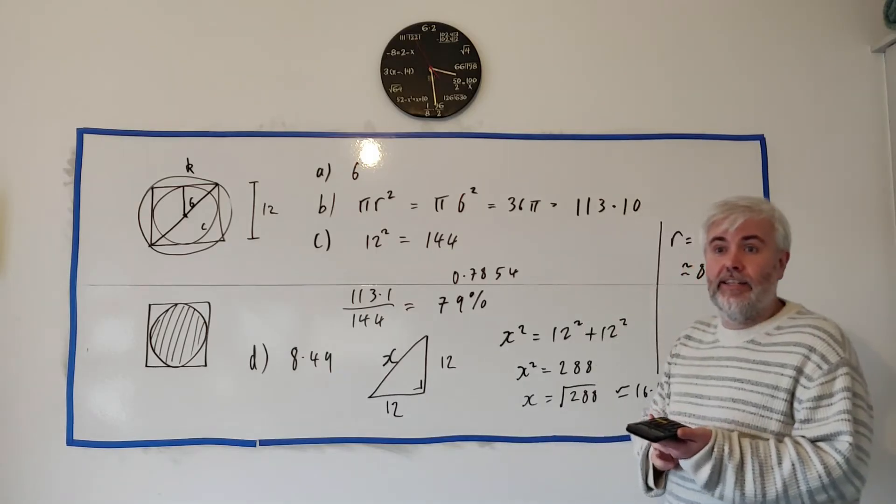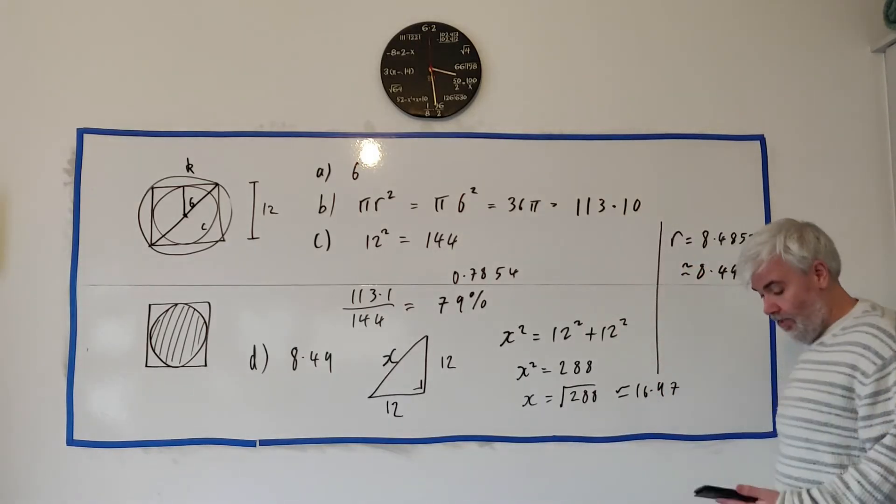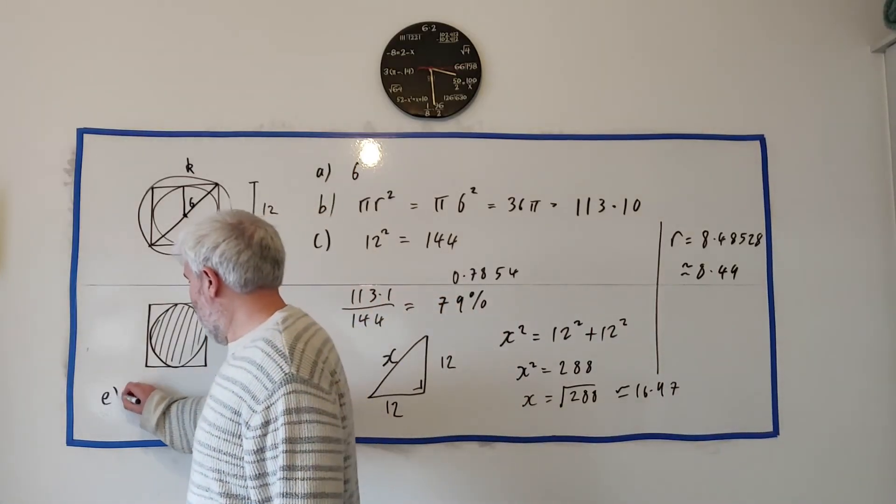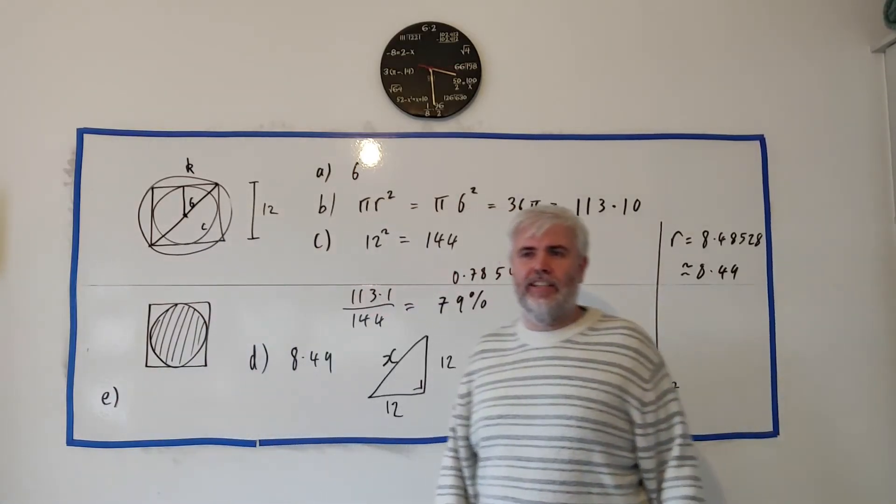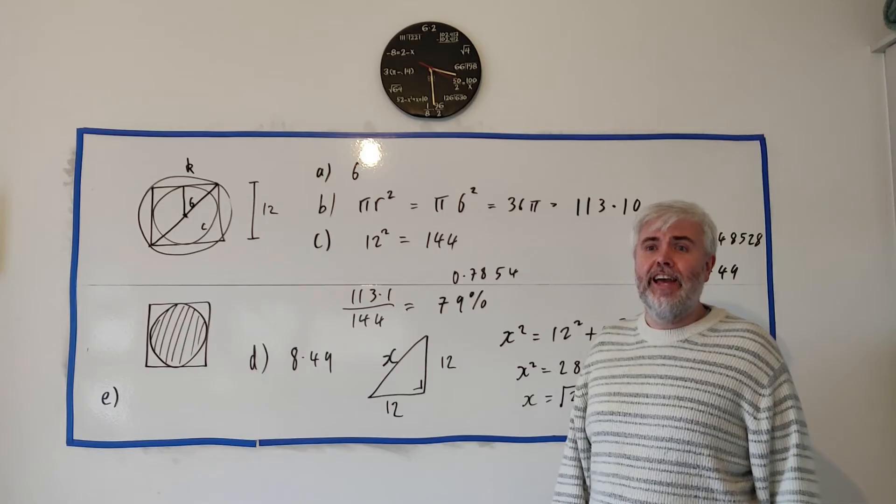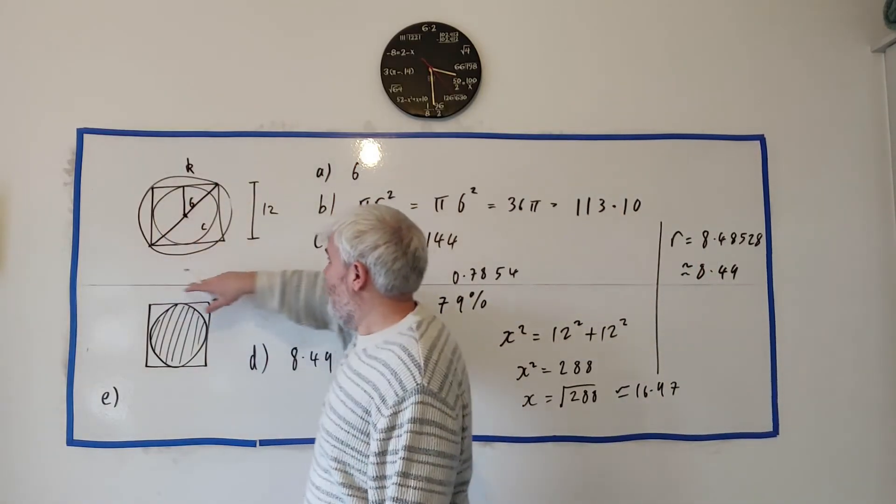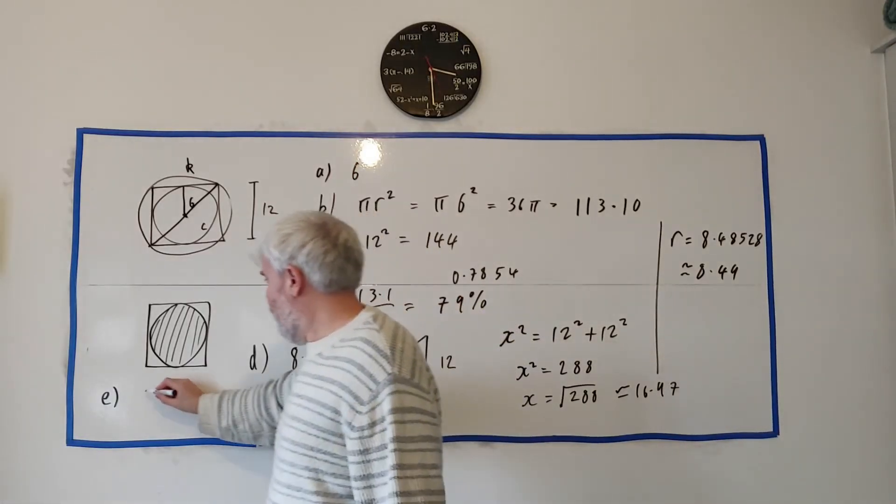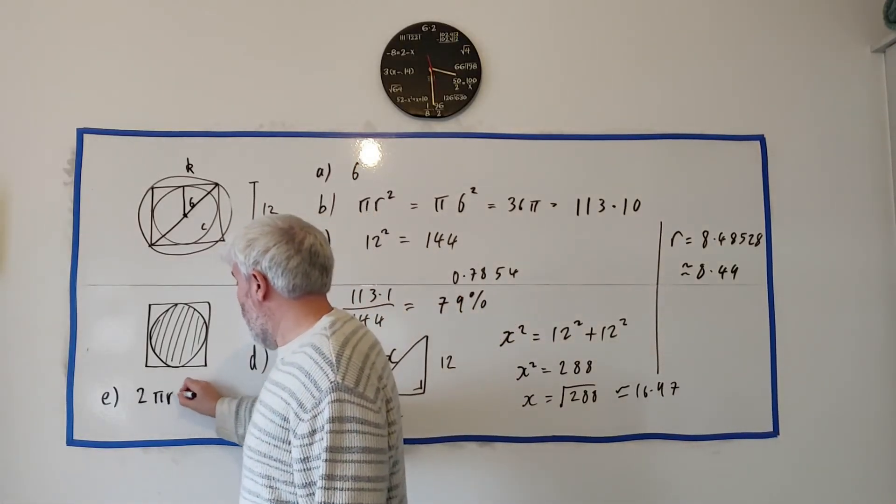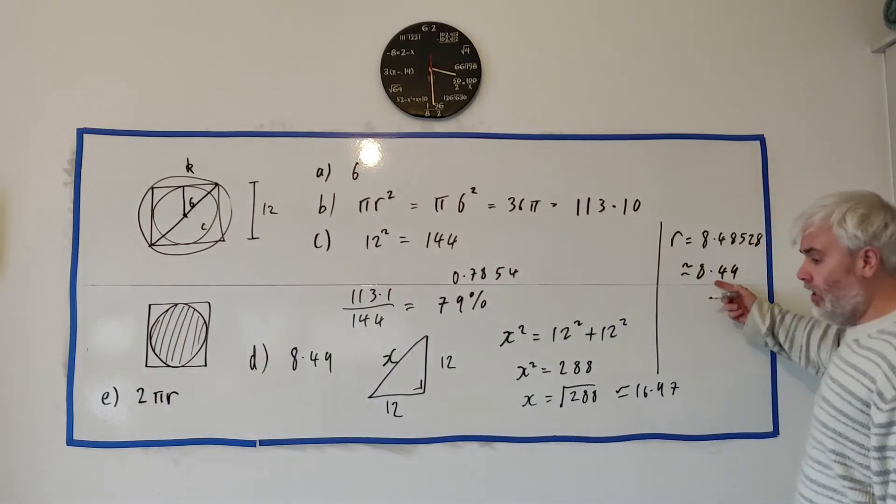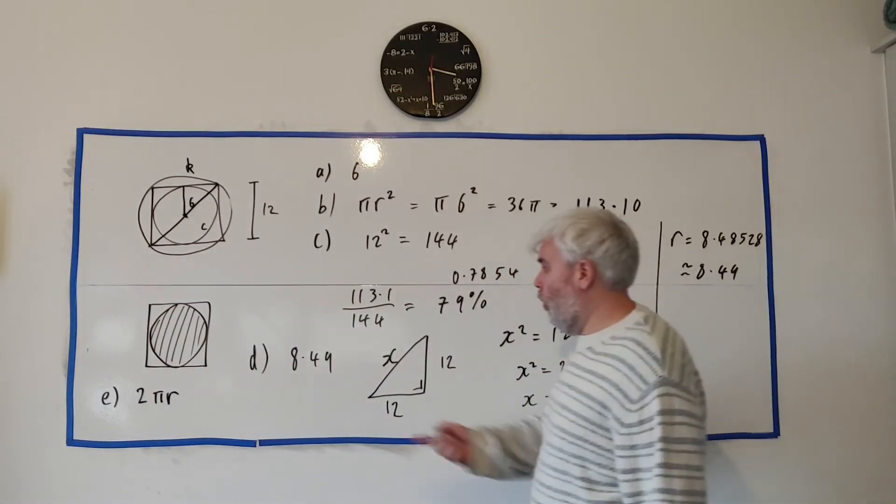Now the last part E. Work out the circumference of circle K. Again the circumference is in our formula book, it's just a simple formula 2 pi r and we know what r is, they gave us r or we have it here in our calculator.